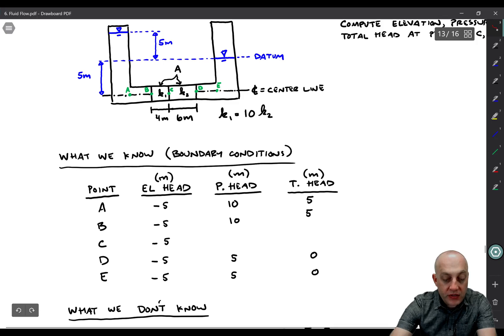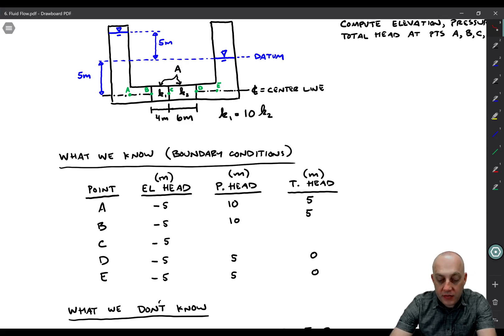We know the pressure head at points A and B, and at points D and E, because all of those points have a clear path to a water surface that doesn't go through any soil. We assume that all of the water is hydrostatic here, and hydrostatic here, therefore we know everything we need to compute pressure at points A and B, and D and E. Points A and B are ten meters below this water surface, therefore the pressure head is ten meters. Points D and E are five meters below that tailwater surface at the datum, so the pressure head is five meters there.